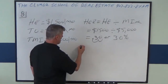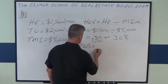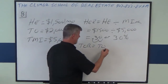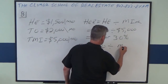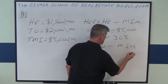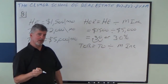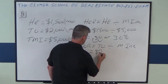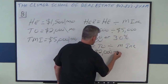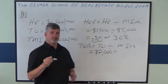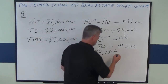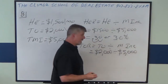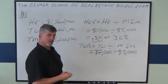If they ask you for the total obligations ratio, that's the total obligations they give you in the problem divided by the income they give you in the problem. In this case, we have $2,000 total obligation divided by $5,000 income, and the answer would be 0.4 or 40%.